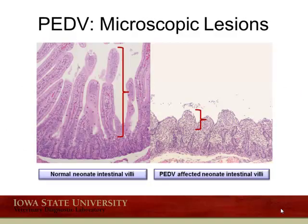Here is a schematic showing microscopically the difference between a normal villus length in a neonatal piglet versus post-infection — what happens to that mucosa once the virus infects and destroys that tissue, the inability to recover quickly, and the subsequent mortality that can occur within that population of pigs.